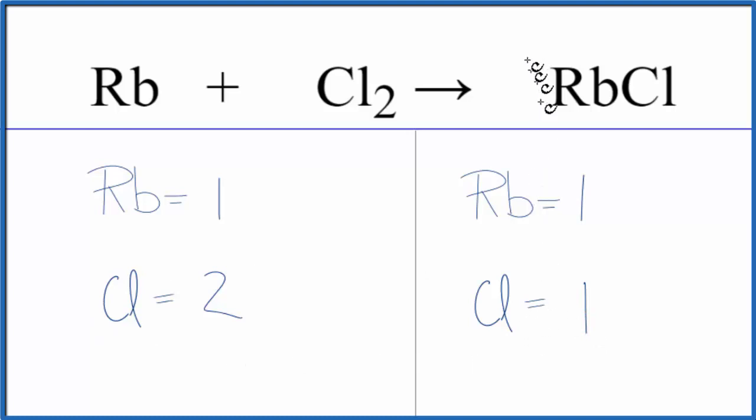So the chlorine atoms they're not balanced. Let's put a two as our coefficient here. So we have two times the one rubidium gives us two of those and then two times the one chlorine. That'll give us two of those. So the chlorine atoms are balanced.